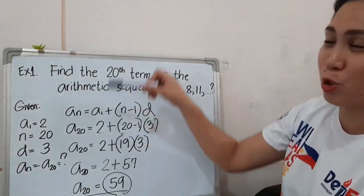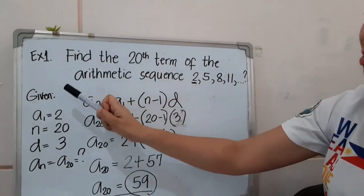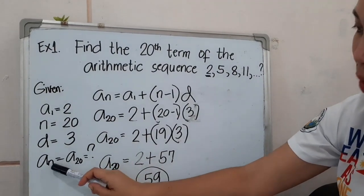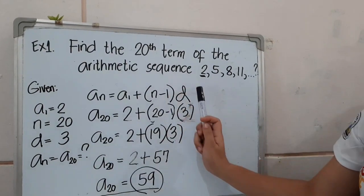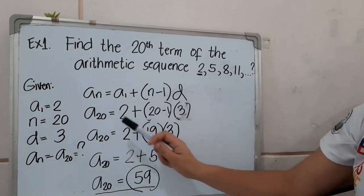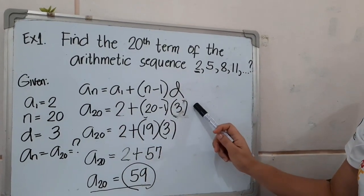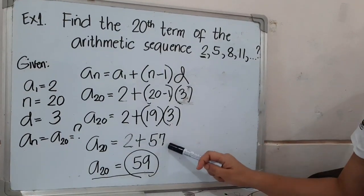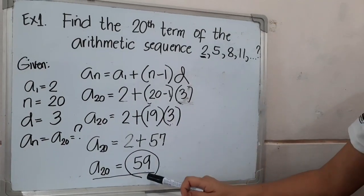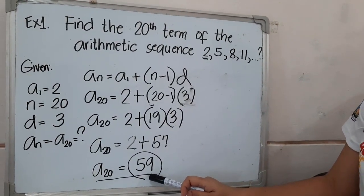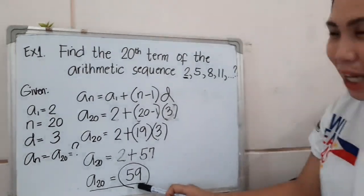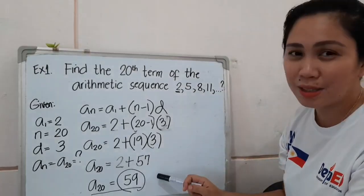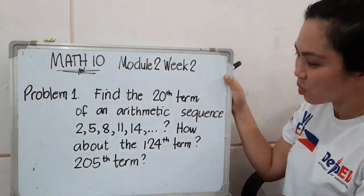In order to solve this kind of problem: first, identify all the given values and see what is being asked. Second, substitute all your given values into the formula. Third, simplify according to PEMDAS to get your final answer. Just do the same with example number 1 that I gave you earlier.